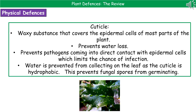Another benefit of the waxy cuticle is that because it's hydrophobic — water-hating — it prevents water from collecting on the surface of the leaf. This is very important because if water sits on the surface of a leaf, fungal spores that have come into contact with that region could germinate. The hydrophobic nature means that water runs off, preventing the fungal spores from germinating.